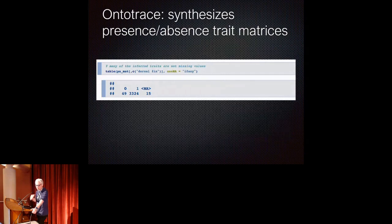And that returns almost 3,400 taxa, whereas originally annotated presence absence for dorsal fin only covered 370. So it almost increased my coverage of taxa by a factor of 10. And so just sort of as an aside, most of these inferences are not missing values. Most of these inferences are actual presences or absences.